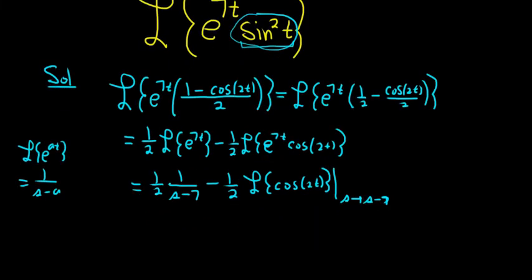So something to keep in mind. And this is equal to 1 half times 1 over s minus 7, minus 1 half. And then cosine has the s, so it's s over s squared plus 2 squared, so 4. And the shift is from s to s minus 7.